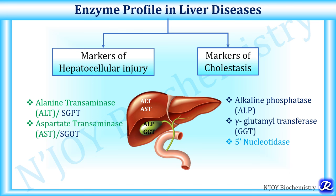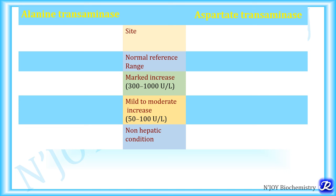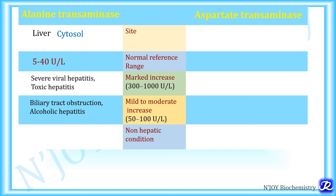Some key points about ALT: it is present in the cytosolic fraction of the liver. The normal reference range of ALT is 5 to 40 units per liter. A marked increase up to 1000 units per liter occurs in severe viral hepatitis and toxic hepatitis. A mild to moderate increase up to 100 units per liter occurs in biliary tract obstruction and alcoholic hepatitis. This is very important during interpretation of laboratory data.